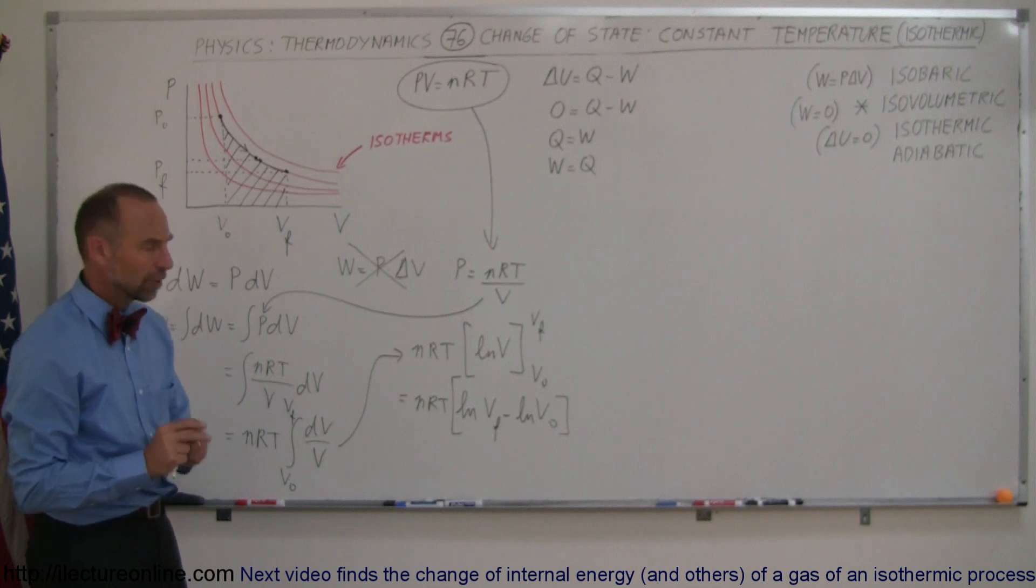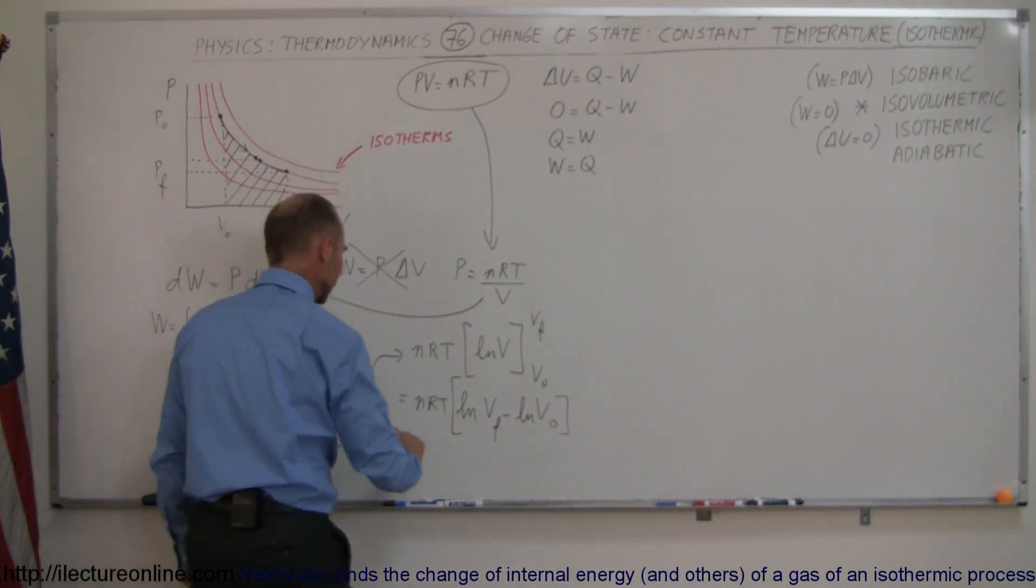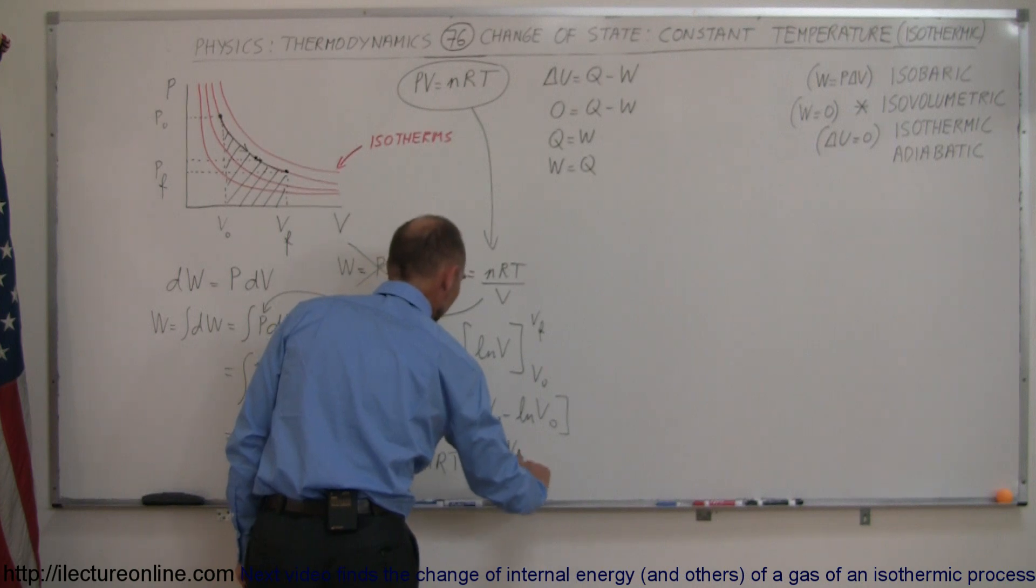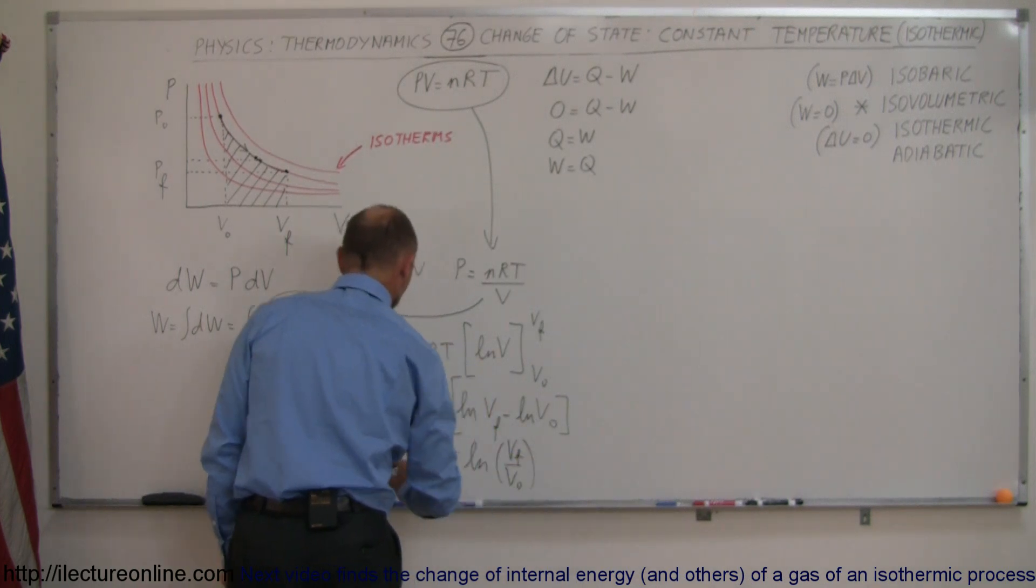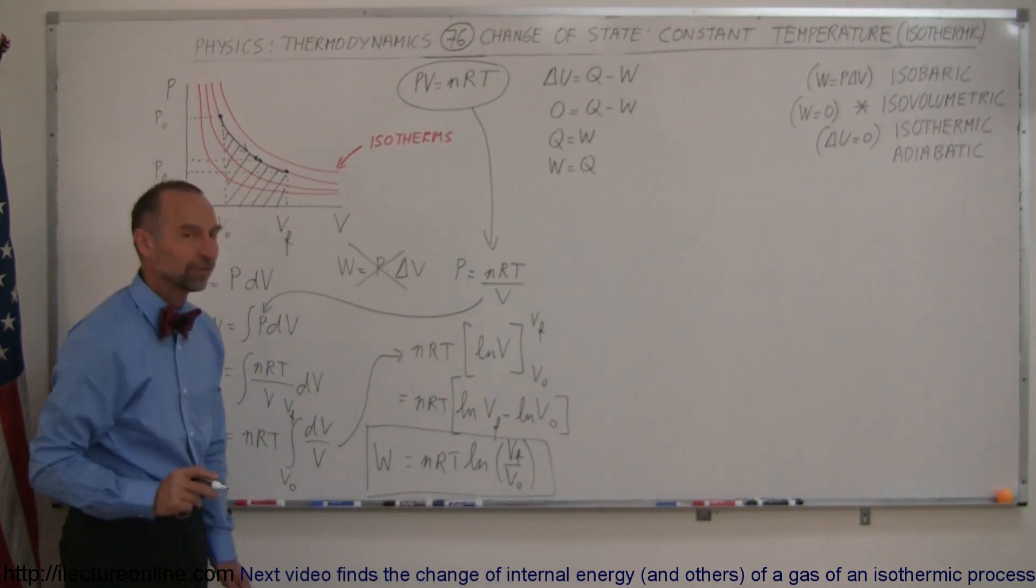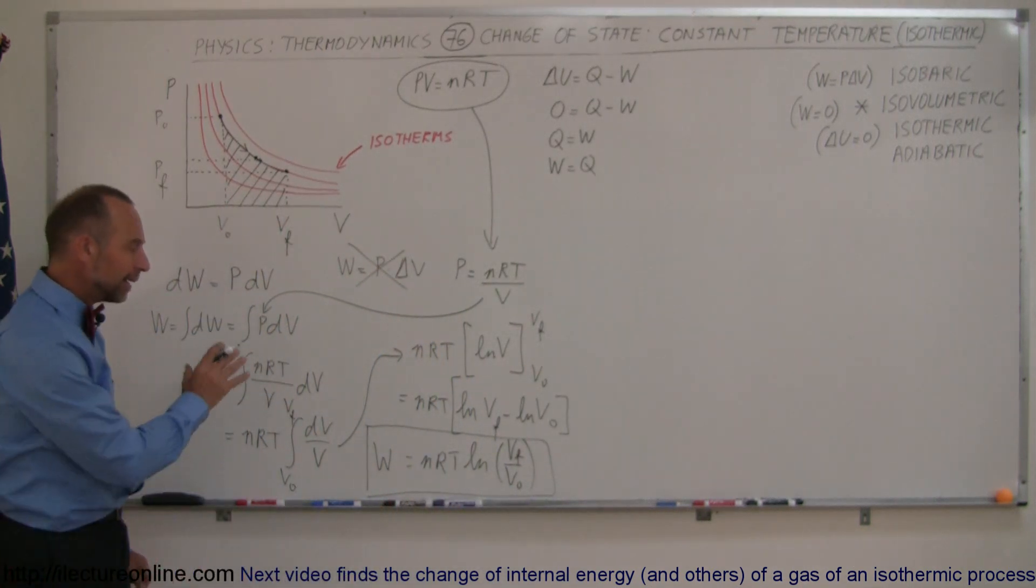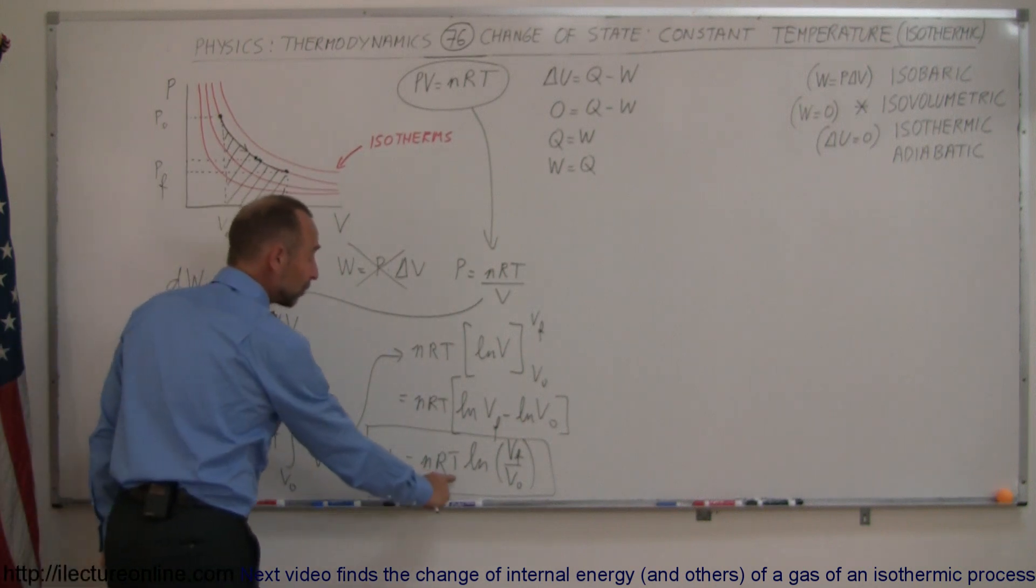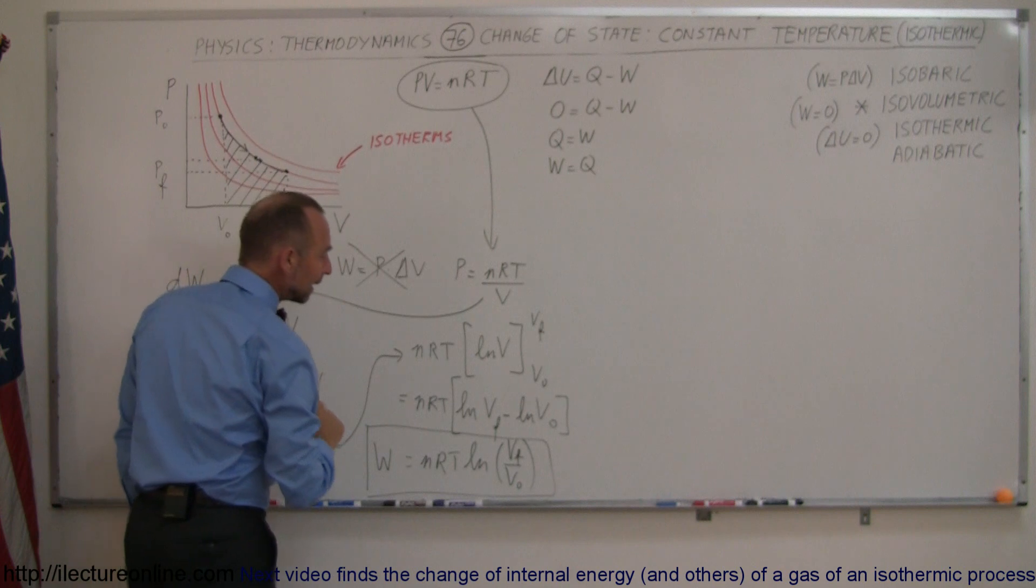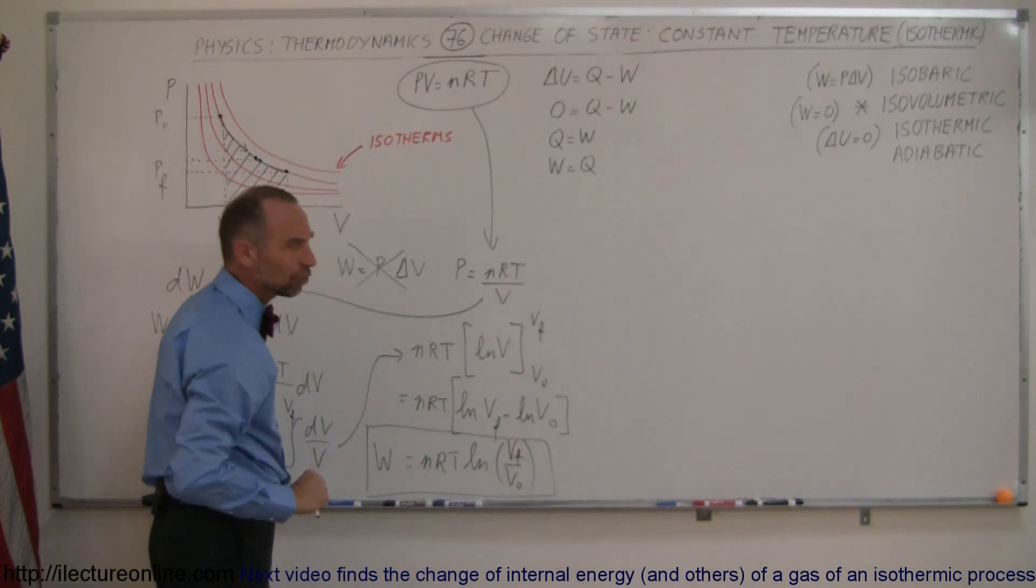And then of course if you remember your rules of logarithms, that is equal to the natural log of the ratio of v final over v initial, and that's how we find the work done in an isothermic process. So you can calculate it like this if you know what the temperature is of the particular process, so you have to know the temperature, and if you know the final volume and the initial volume.